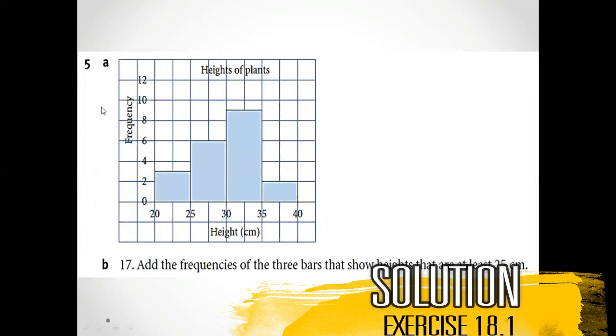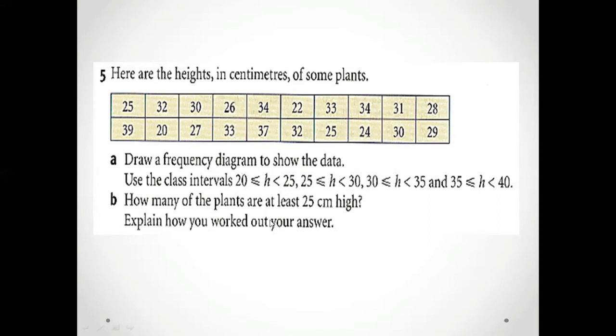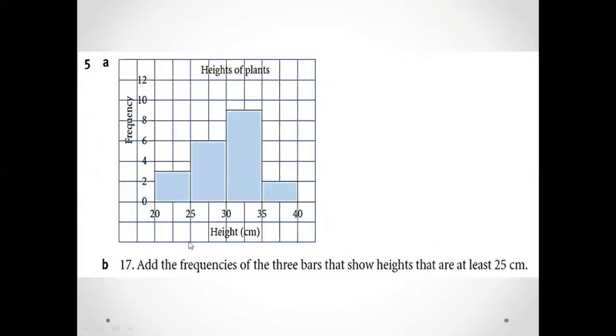Okay, so with the help of that information we will draw our chart. And the part should be: How many of the plants are at least 25 centimeter high? Explain your work. So here I write the frequency of the 3 bars that show the height that are at least 25 centimeter, means minimum 25 centimeter. So with the help of this we are fine. Thank you so much, I hope you understand. Take care, goodbye.